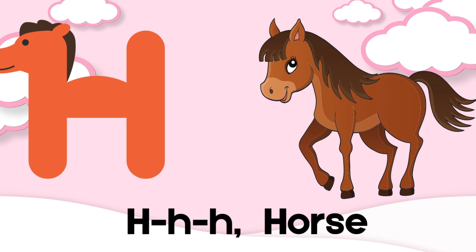I is for Indian bull, d-d-d-d. J is for Jersey cow, k-k-k-k. K is for Kunekune pig, ba-ba-ba-da. L is for llama.